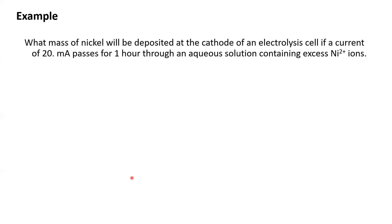So let's put all of that together. And it's going to look like a stoichiometry problem. What mass of nickel will be deposited on the cathode of an electrolysis cell if a current of 20 milliamps for one hour flows through an aqueous solution containing nickel ions. First of all, the nickel ions are going to absorb electrons and become nickel atoms. And the ratio is a one to two ratio. That's going to be important.